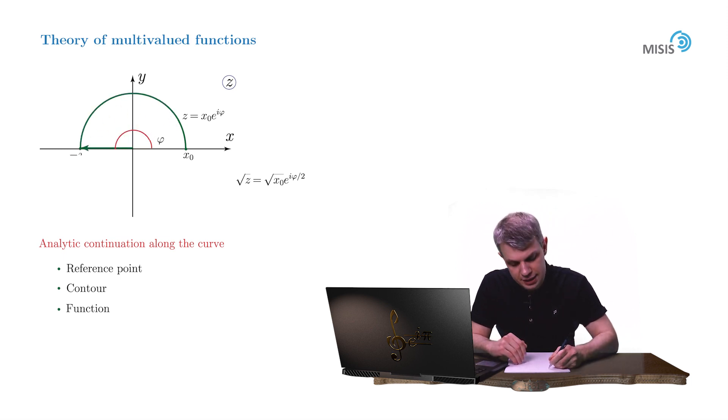By making a π rotation, we arrived at point negative x₀. And the square root of negative x₀ is equal to e^(iπ/2) times the square root of x₀, which yields i√x₀.